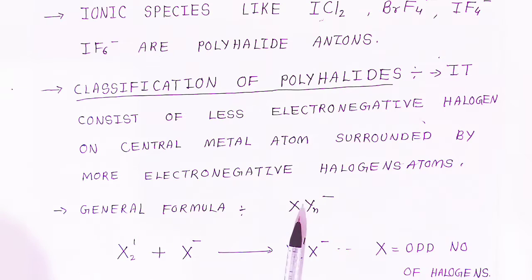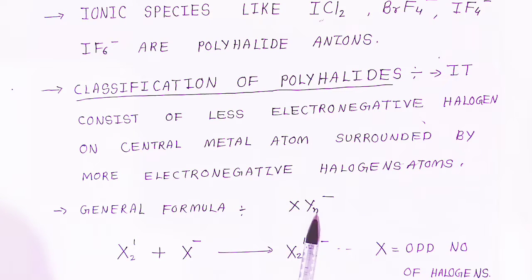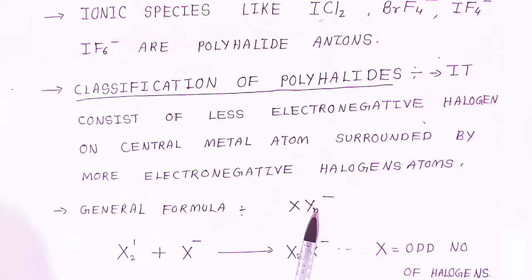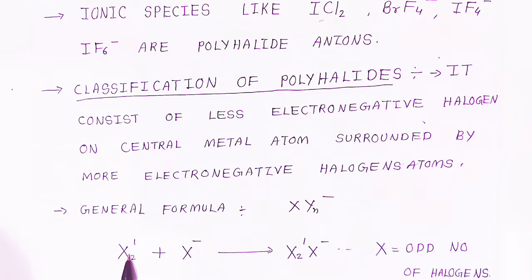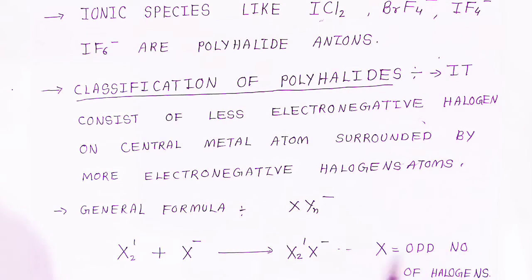In the general formula AxYn, X represents the central halogen atom and Yn represents the more electronegative surrounding atoms. X is always an odd number of halogens. Sometimes a halogen combines with the same halogen atom to form this type of compound.